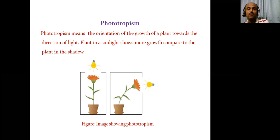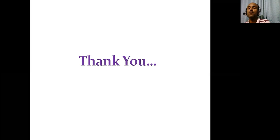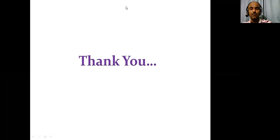The next important topic is phototropism, a biological phenomenon in which the orientation of plant growth toward the direction of light is called phototropism. Plants in sunlight show more growth compared to plants in shadow. In this way, various biological phenomena can be explained with the help of photochemistry, demonstrating the importance of photochemistry. That's it for photochemistry part two — thank you.